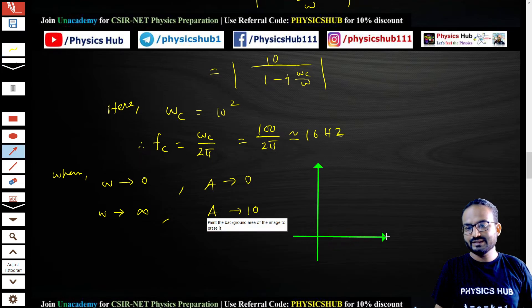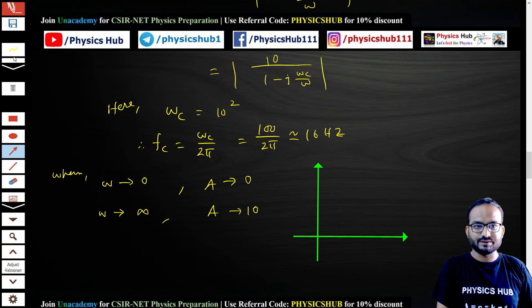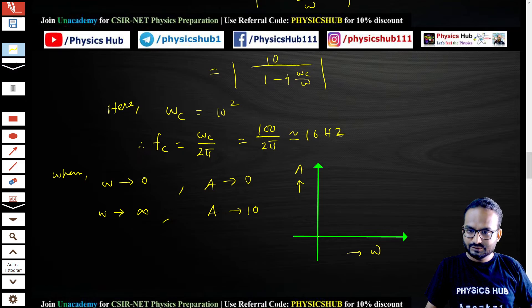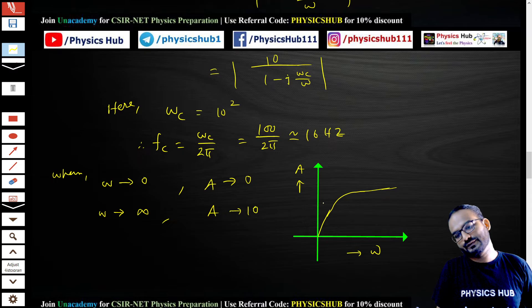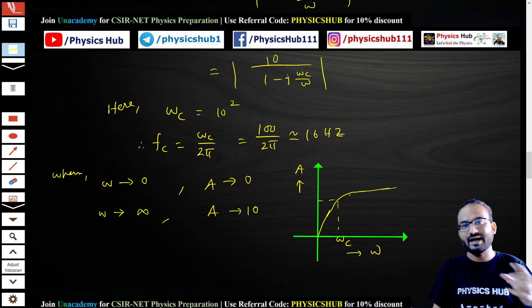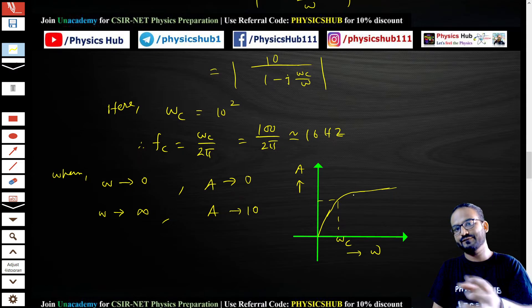When omega tends to infinity, A is becoming 10. So if you draw a graph between the gain and the angular frequency, A versus omega, near 0 gain is 0, and as we are going to a particular frequency your gain becomes saturated. This kind of graph.